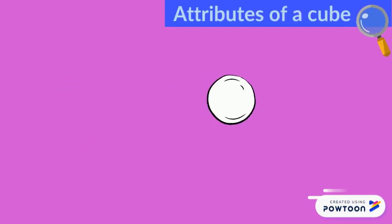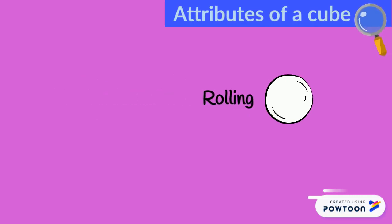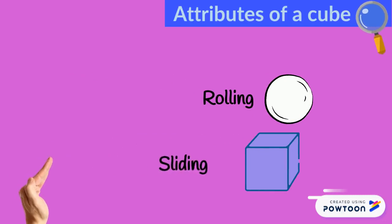Put the cube on the table and give it a little push. A cube does not roll like a ball. A ball can roll because it has a curved surface. A cube can only slide because all the faces of the cube are flat.